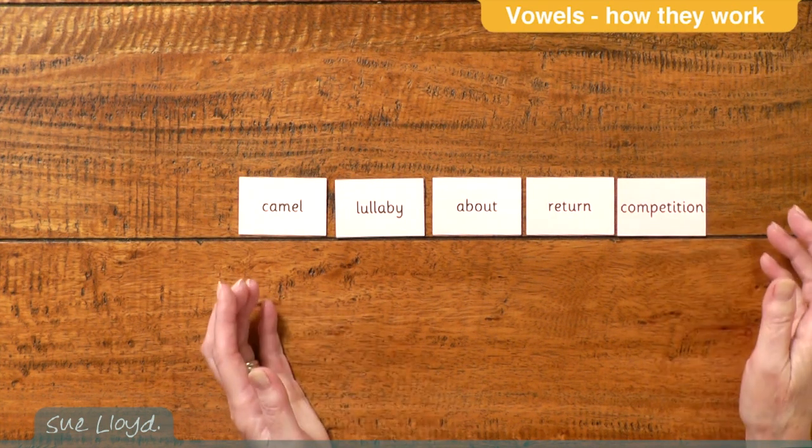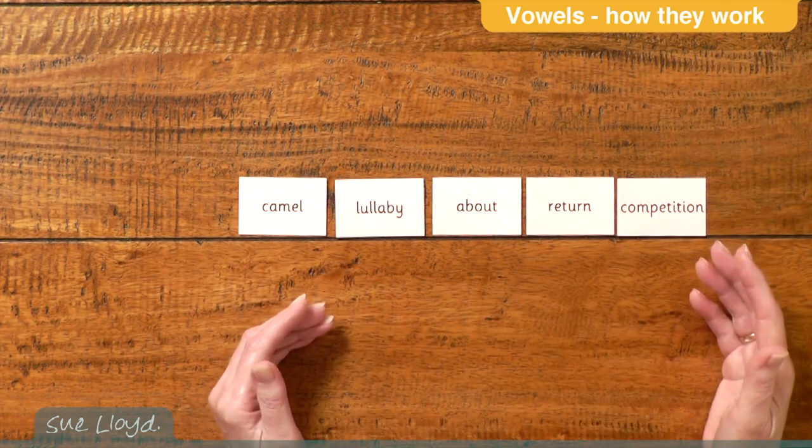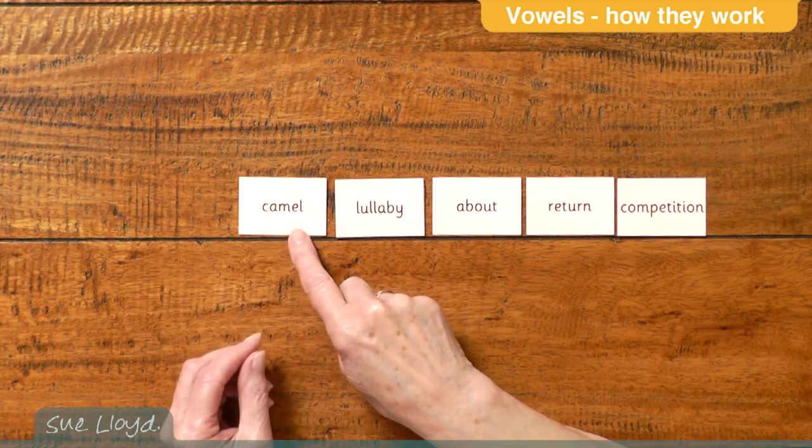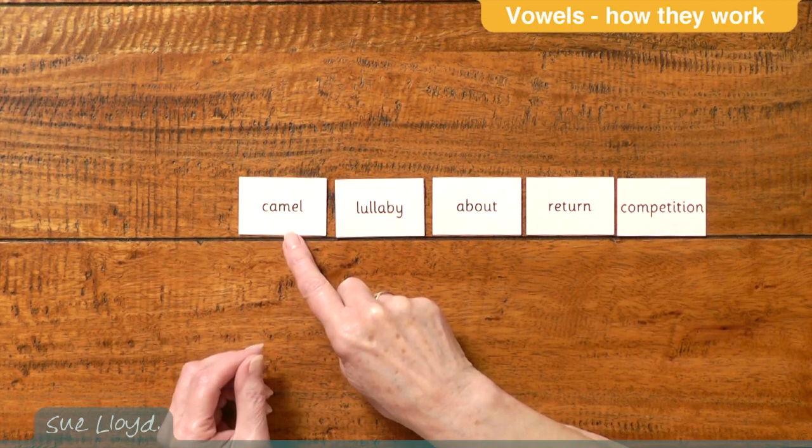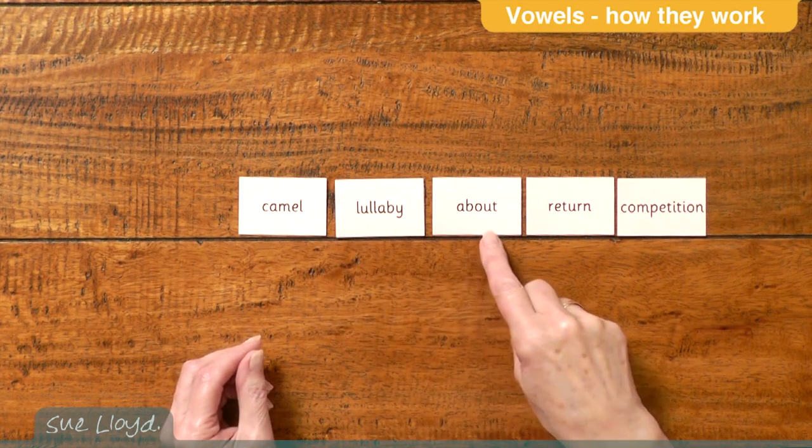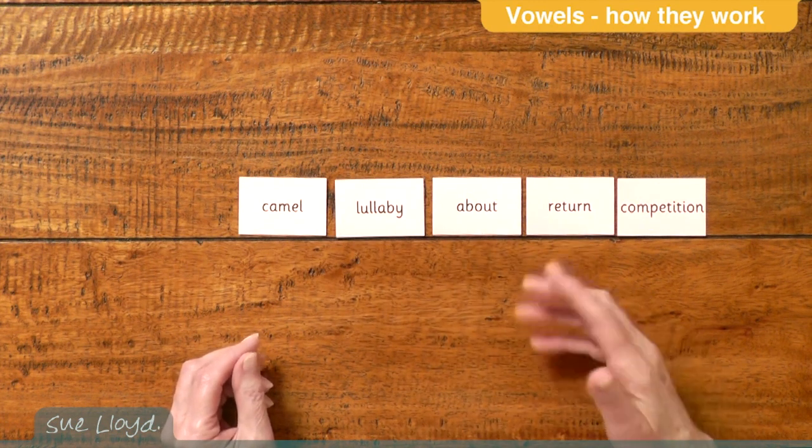cause reading difficulties for children who are familiar with these words in their spoken language. Those children might go camel when they blend it, but then quickly see that that's camel. Lullaby, about, return - it's close enough for them to get it.